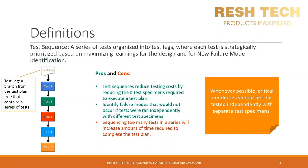A test sequence is a series of tests organized into test legs where each test is strategically prioritized based on maximizing learnings for the design and for new failure mode identification. When we subject a product, subsystem, or component to a series of stresses or test conditions, we can uncover additional failure modes that would not be captured by each condition independently with separate test specimens or test units.